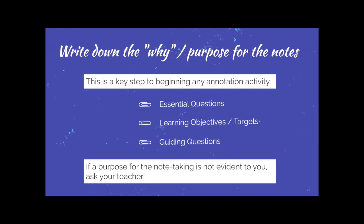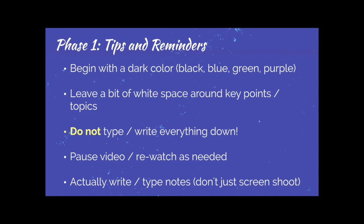Here are some tips and reminders for doing a good job in your Phase 1 notes. You want to begin with a dark color — blue, black, green, or purple — but one color. That's because when you come back to revise them later, you'll be adding different colors to signal different ideas to your brain. Make sure to leave a bit of white space around key points and topics — it's a chance to go back and add more information later. Do not type or write everything down. Resist the urge to do this. The whole point of taking notes is to annotate, to truncate, to paraphrase the information being given to you and put it in a shorter, more concise, and economical form.